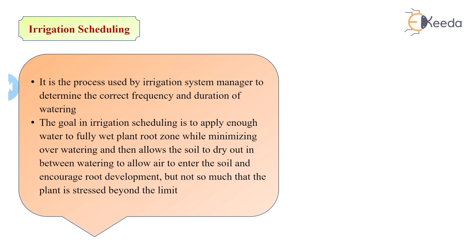The main function of irrigation scheduling is to decide and determine the correct frequency — that is, the watering period — and the correct duration of watering to the crop. The purpose is to wet the root zone properly without giving over-irrigation water. Then the plant root and soil may be allowed to dry, allowing air to enter so that the plant root gets properly developed, and the nourishment of the plant will take place.